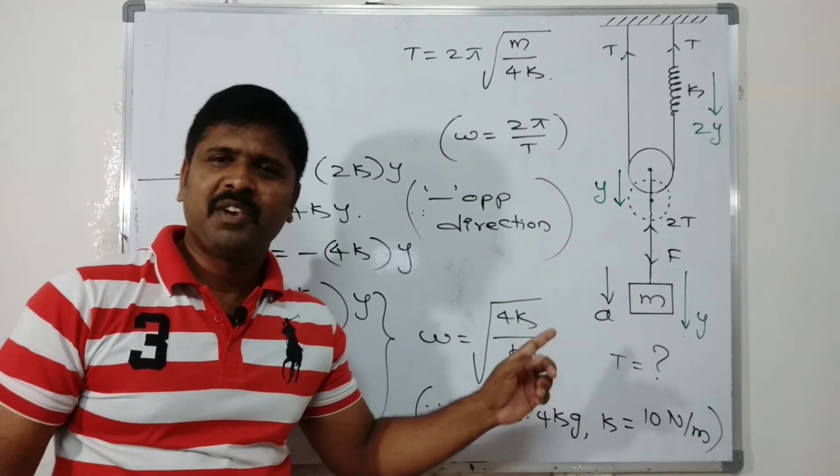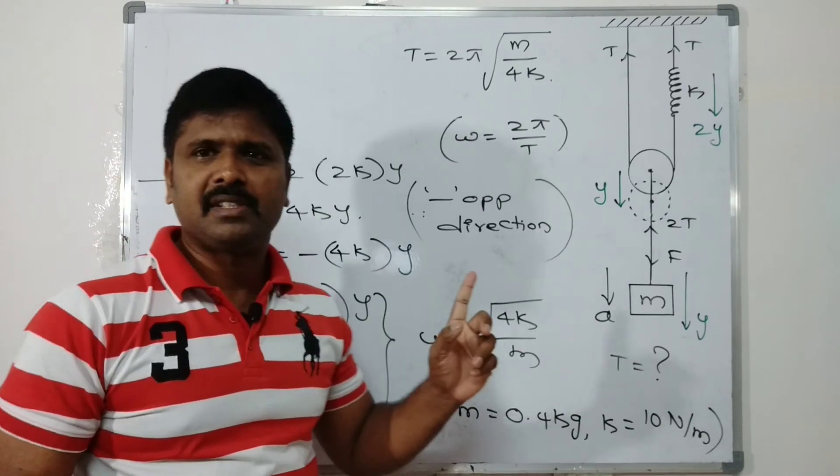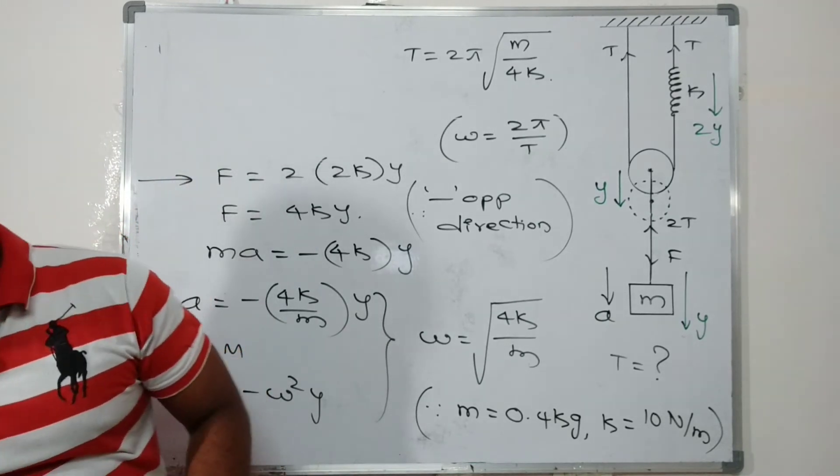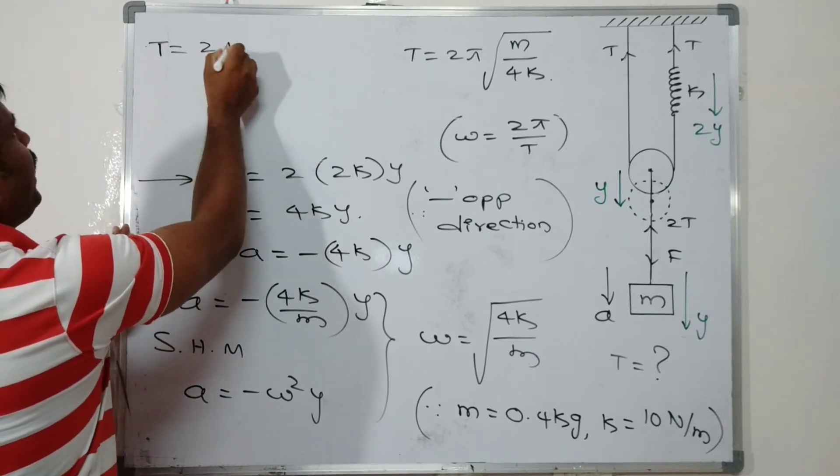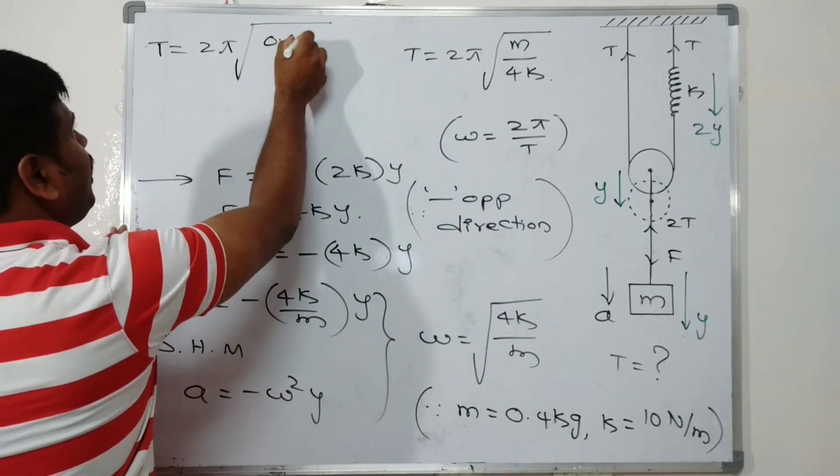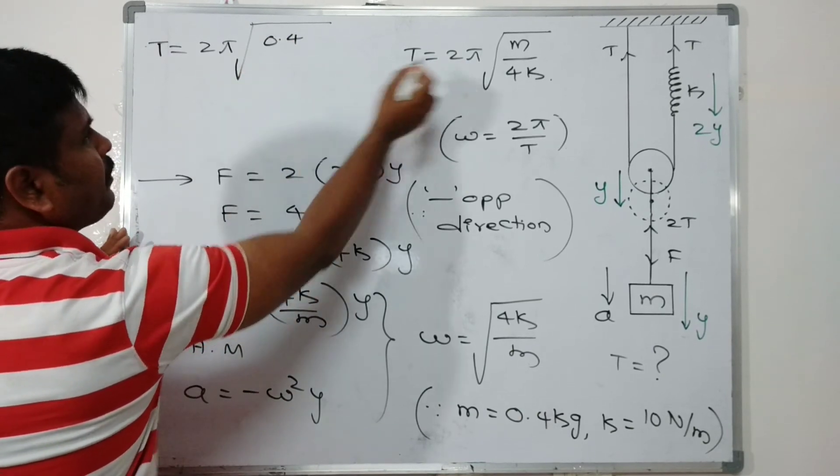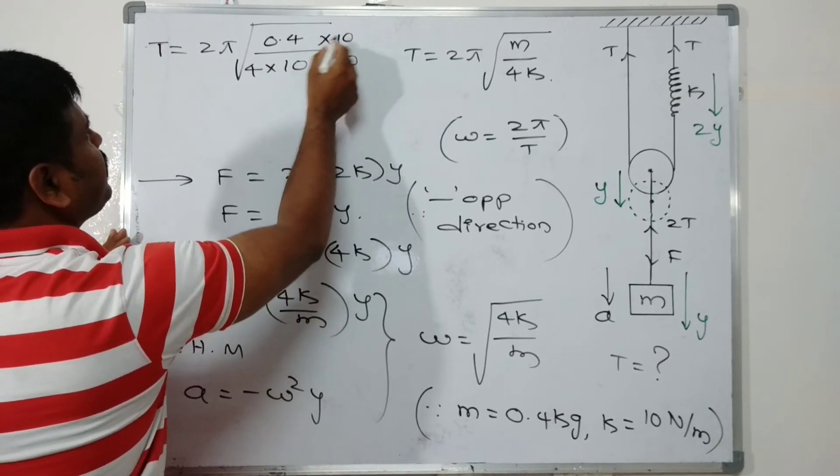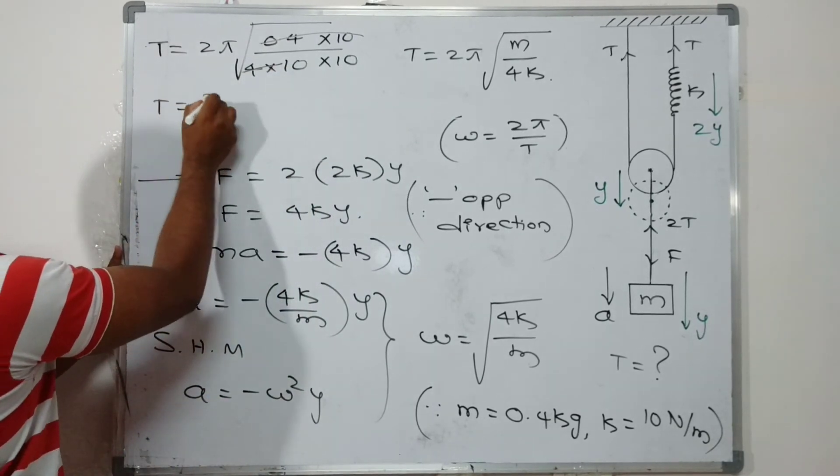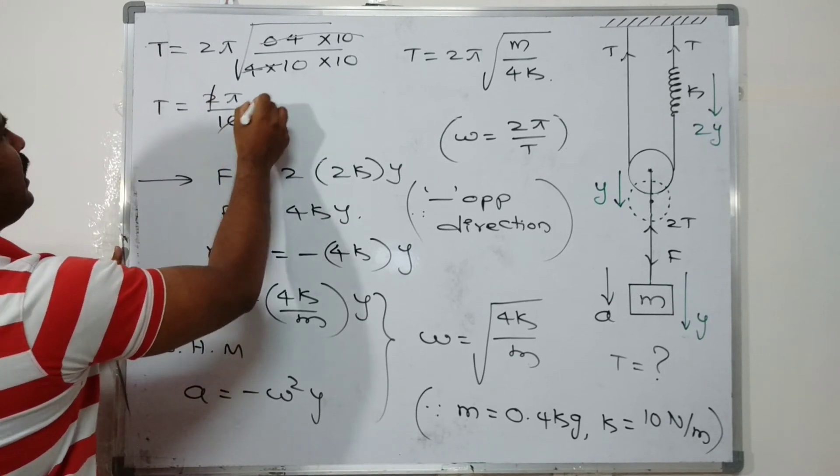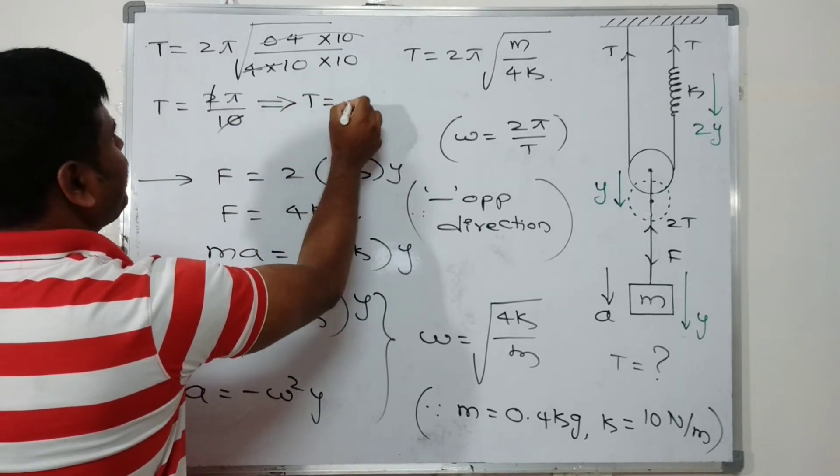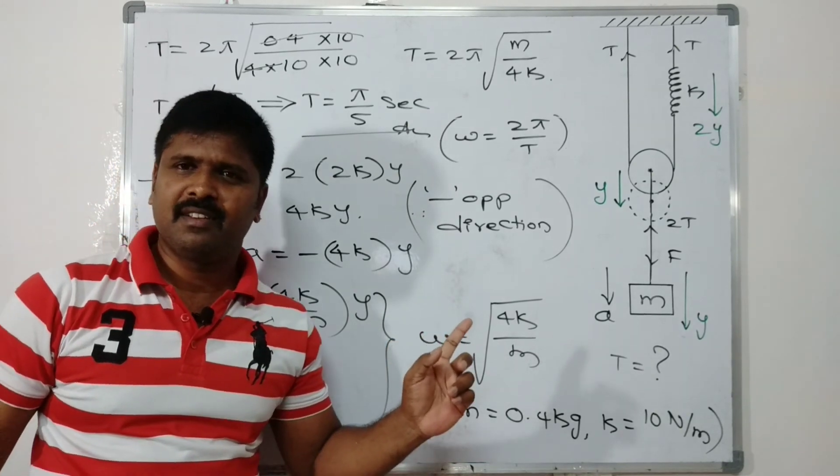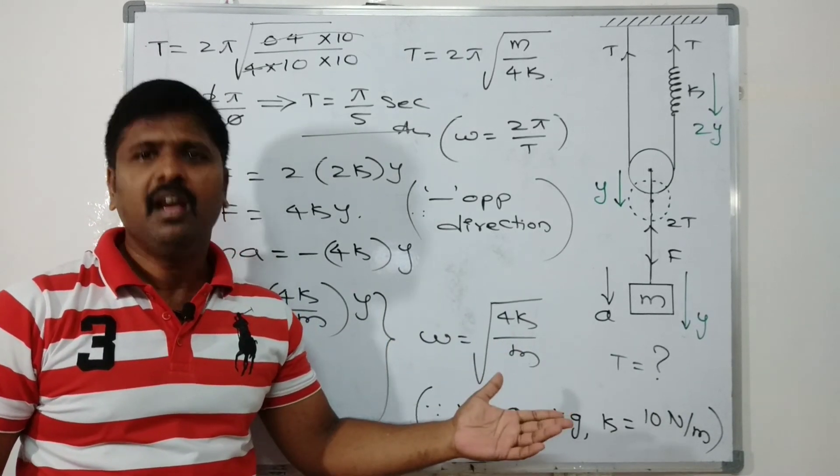But values are given, so we have to replace the values in the above equation. Time period T = 2π√(m/4k). T = 2π√(0.4/(4×10)). Here 4 gets cancelled with 0.4, giving T = 2π/√10. Taking common factors, T = 2π/10 = π/5 second is the answer. Sorry for the mistake in how I replaced the values initially, but the answer is correct.